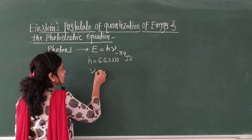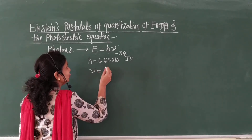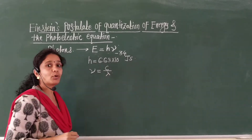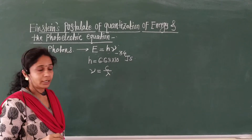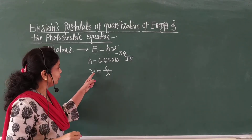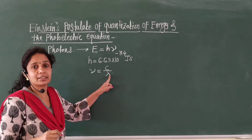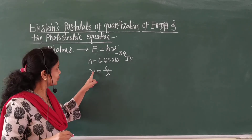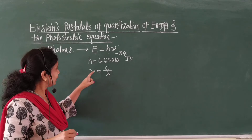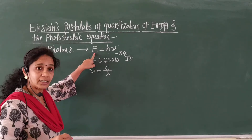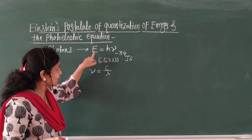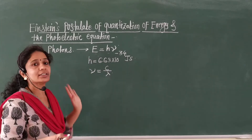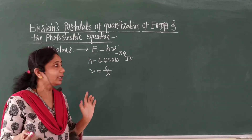You know the relation between ν and λ: ν = c/λ. As ν is greater, λ is smaller. Therefore, as ν is greater, E is larger; and as λ is smaller, E is larger.